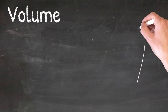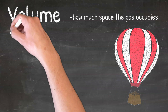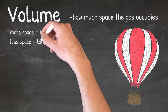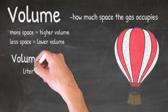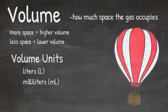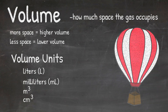Now let's look at volume. Simply put, volume is just how much space the gas occupies. The more space it takes up, the higher the volume, and the less space it takes up, the lower the volume. Common units for volume in gas laws are liters, abbreviated L, or milliliters, abbreviated mL. You might also see cube units like meters cubed or centimeters cubed, but these are less common. Just like with pressure, knowing the different units for volume can help you identify the correct numbers in problems.